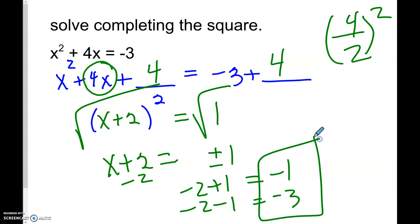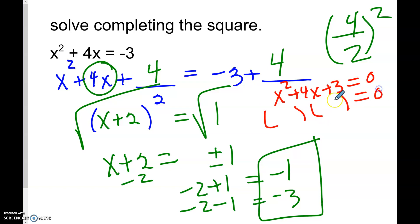You can verify by factoring. Add 3 to both sides: x² + 4x + 3 = 0. What two numbers multiply to 3 and add to 4? That's plus 3 and plus 1: (x + 3)(x + 1) = 0. The zero factors give x = negative 3 and x = negative 1, confirming our answers.